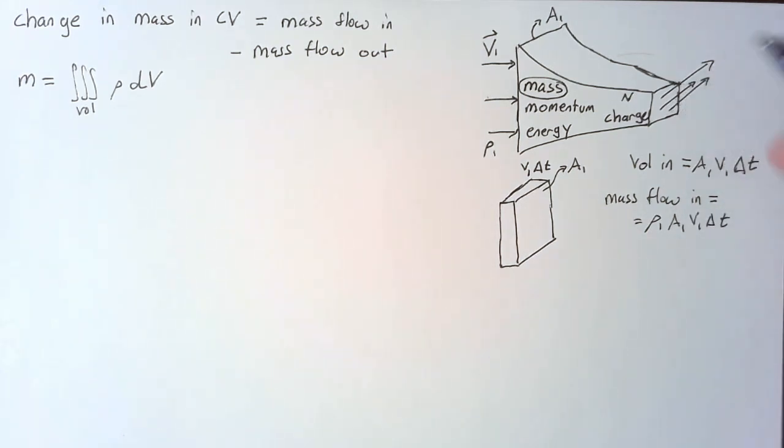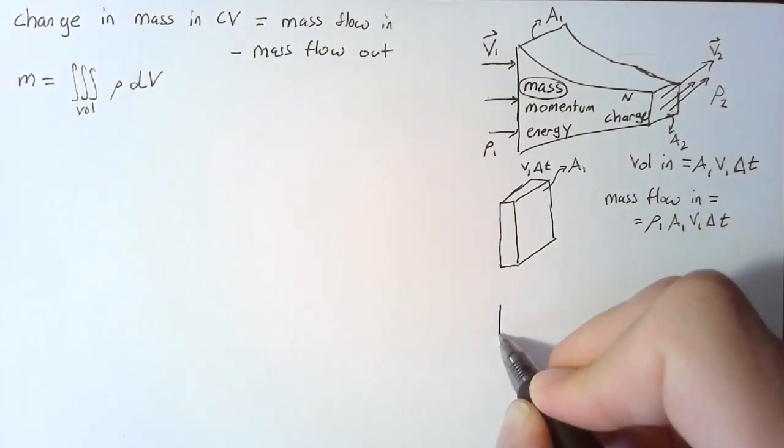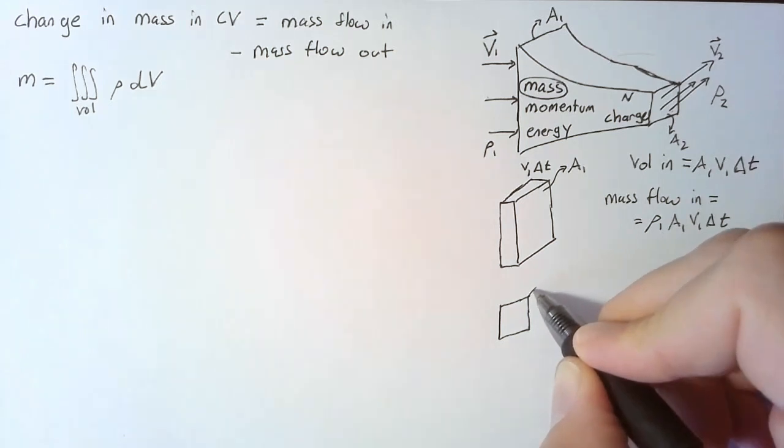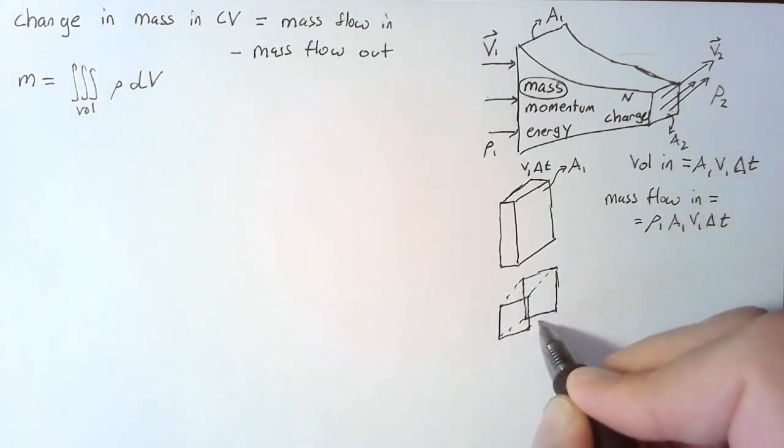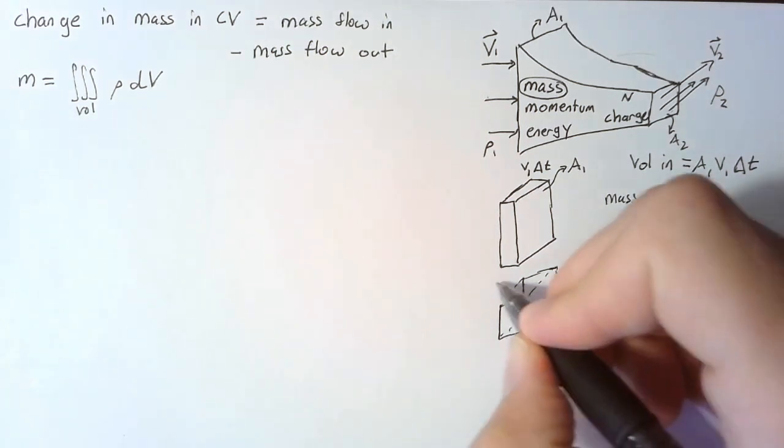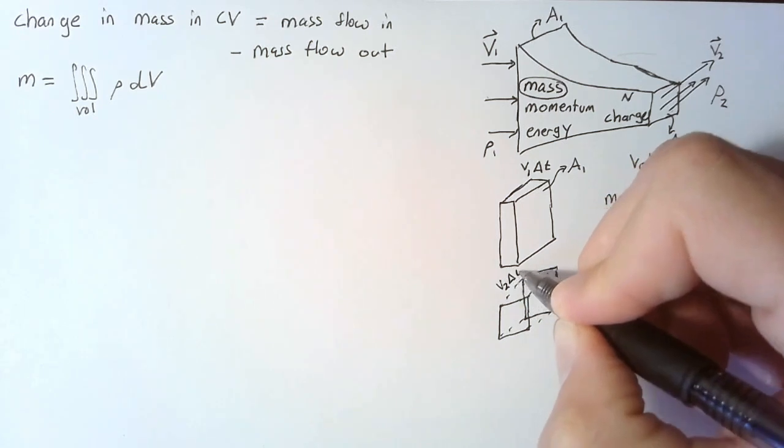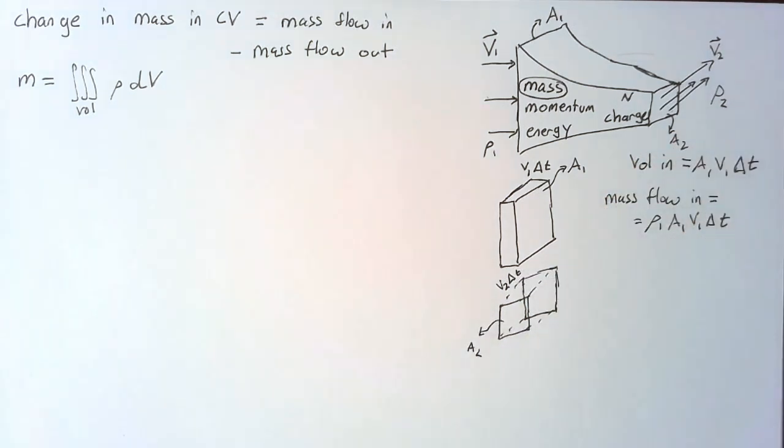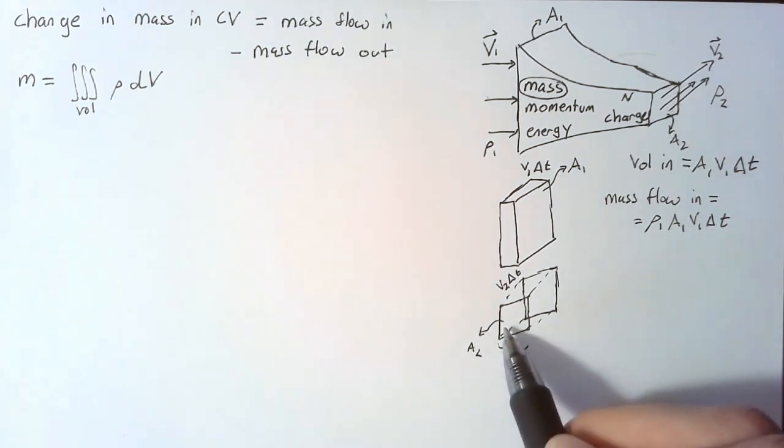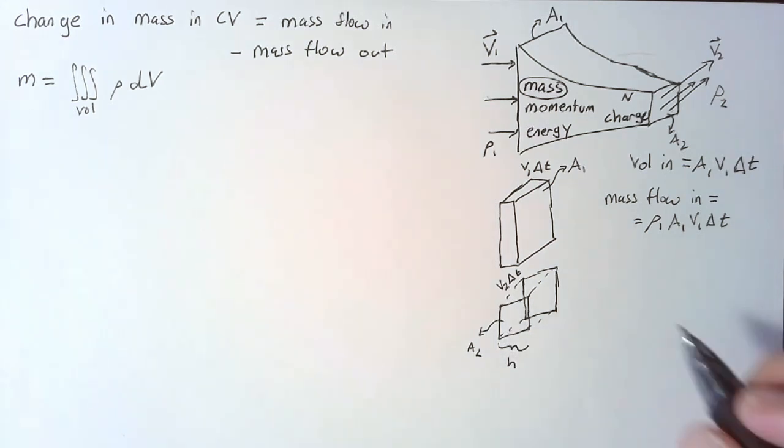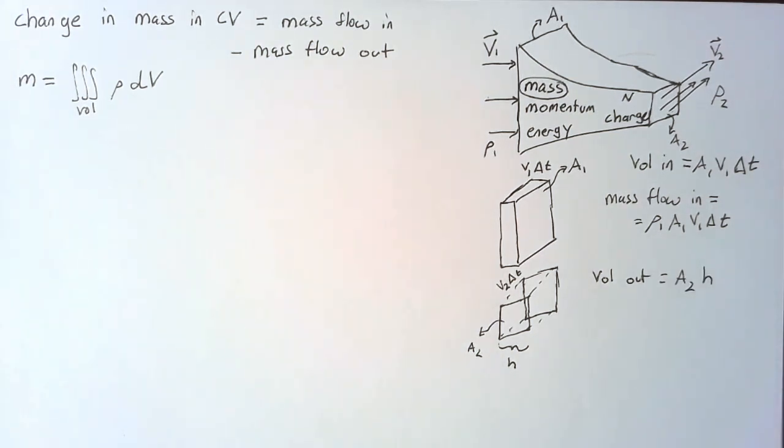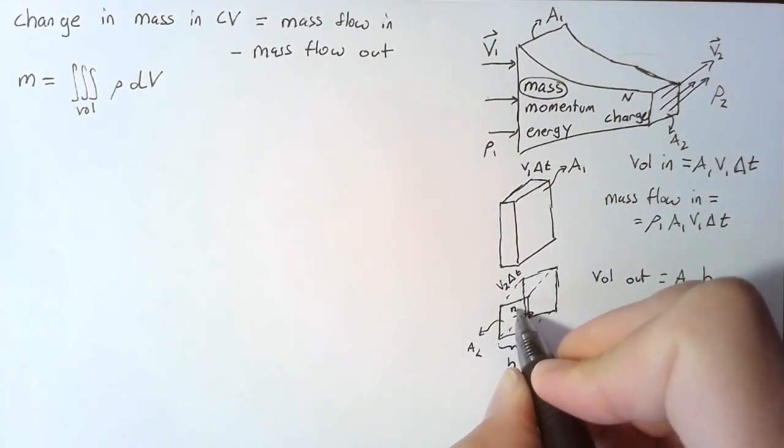Now let's look at our second surface. We can call this a2, call this v2, and say that we have some rho 2 associated with it. Things are a little bit different this time because our velocity is leaving at an angle. In this case, we have some highly angled geometry. The length of this line is still just v times delta t, and we're still looking at an area a2. The volume of this geometry is not v2 delta t a2. It's a2 multiplied by some h, which is measured directly normal to one of our surfaces.